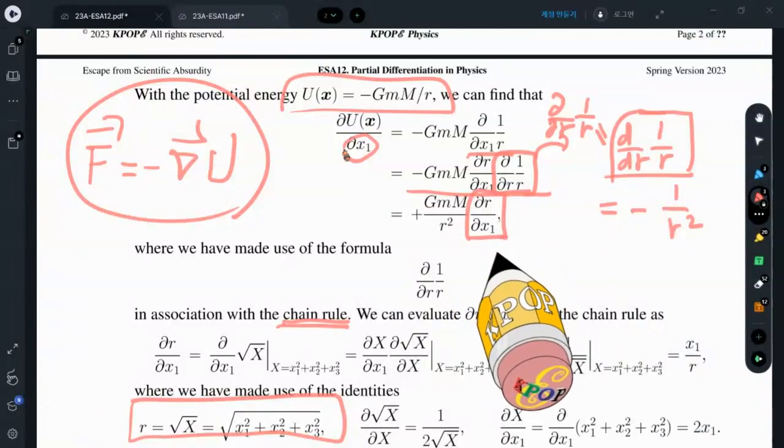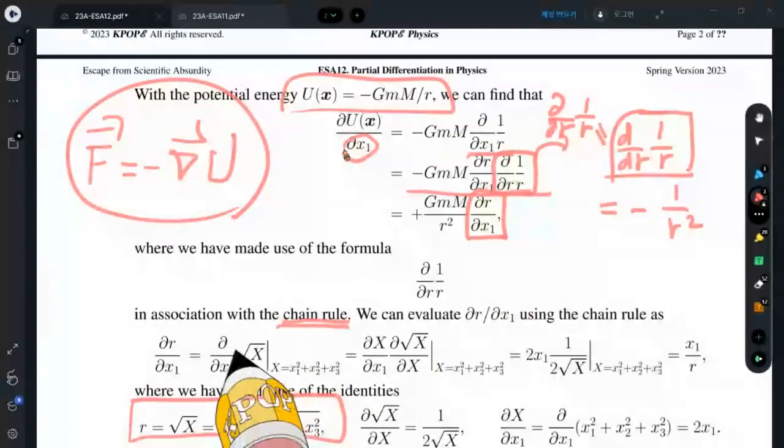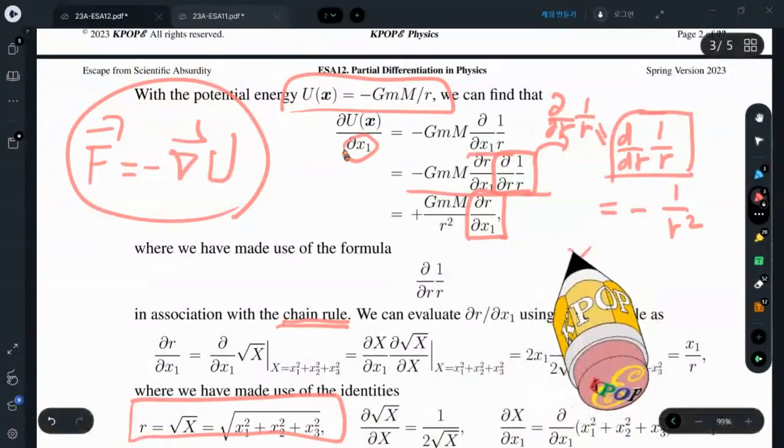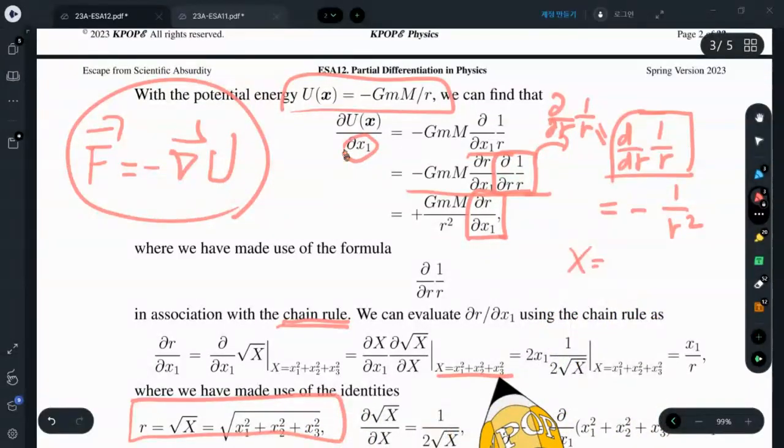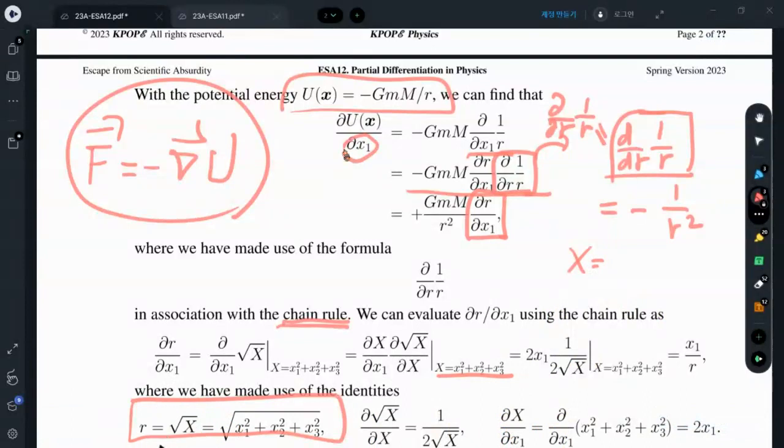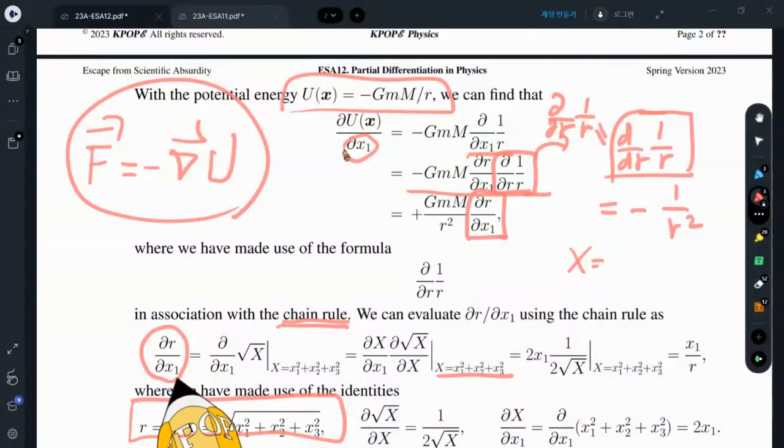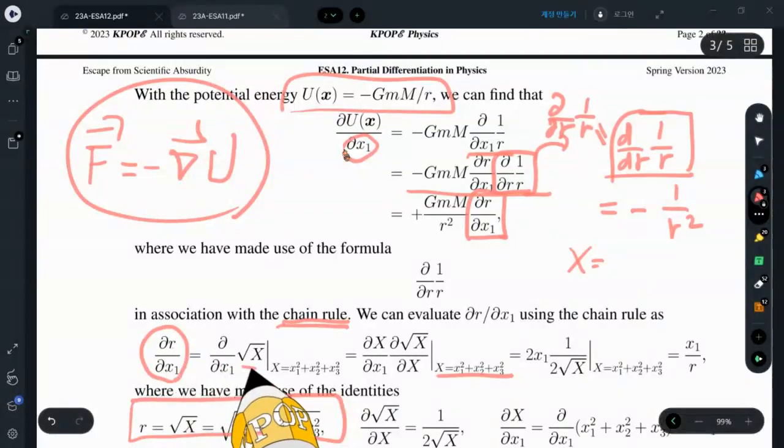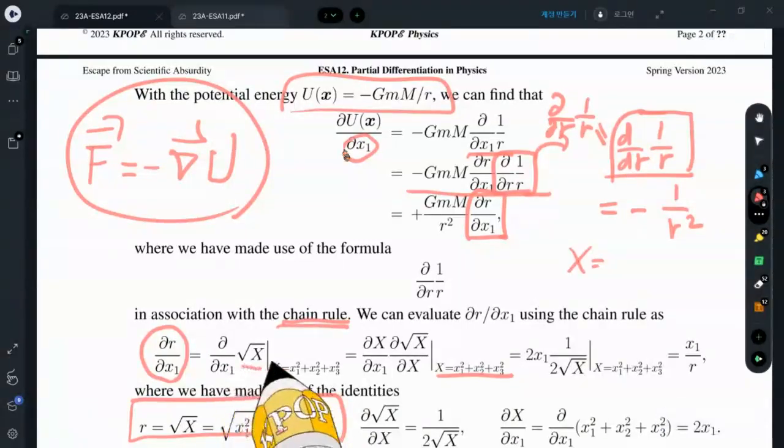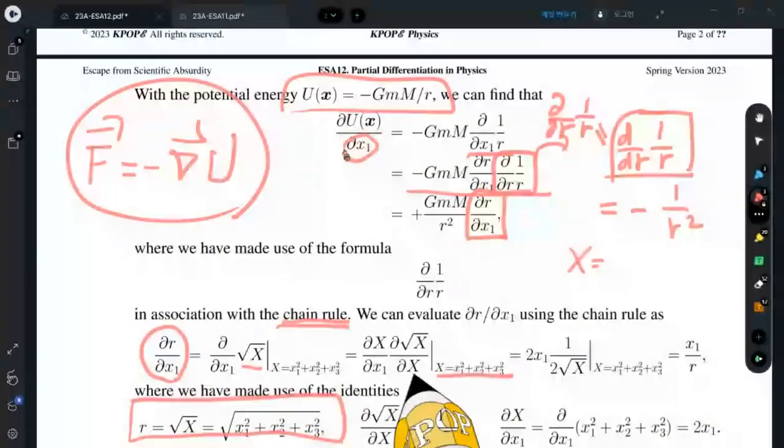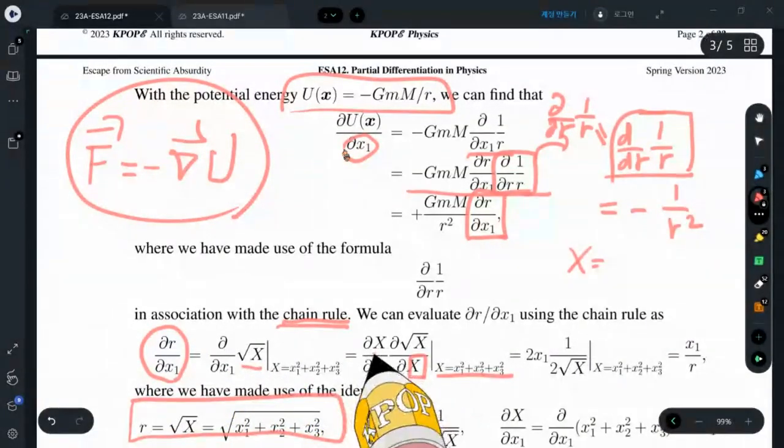If I want to evaluate this, replace r with square root of capital X and capital X is just inside. Use chain rule again. The derivative of r with respect to x1. Because r is a square root of X, we first take the derivative with respect to capital X and take the derivative of capital X with respect to x1.